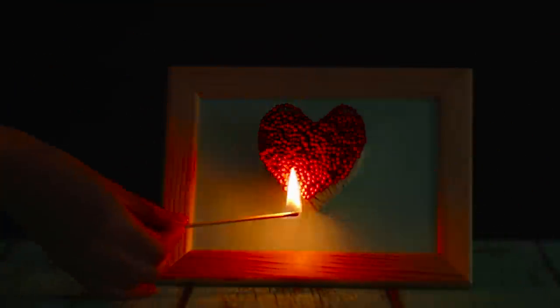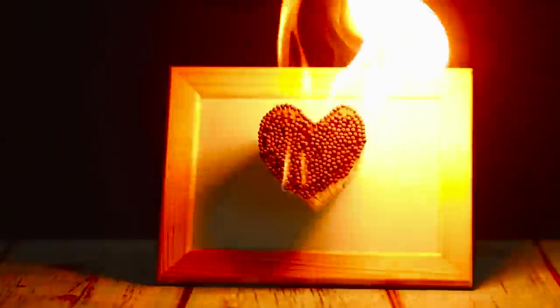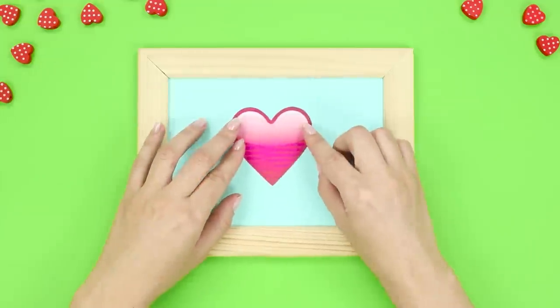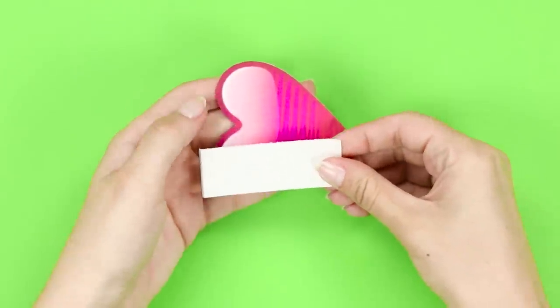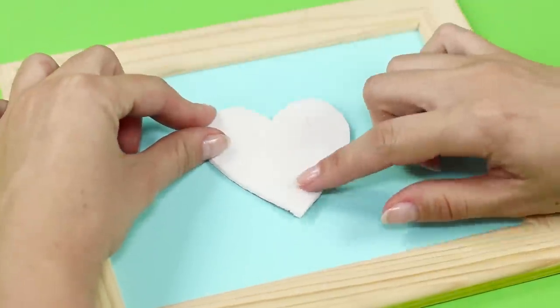If you really want to declare your love, then do it with a spark. You need a paper heart pattern. Glue strips of thick double-sided adhesive tape over it and attach it to the frame. Now you need matches. Many matches.